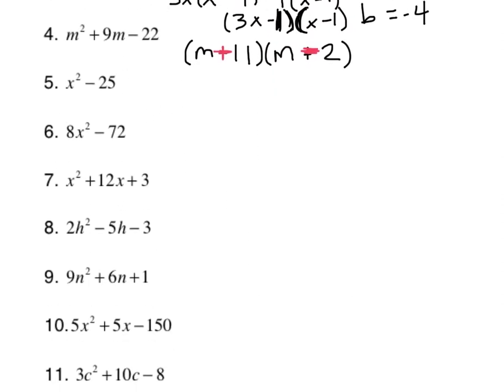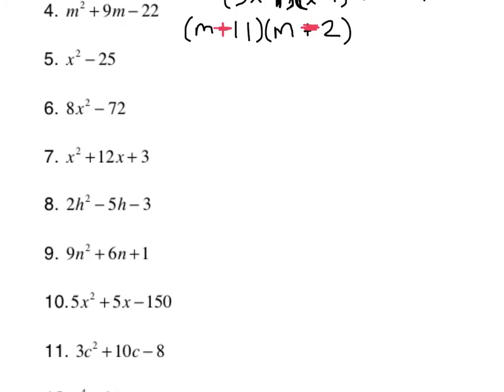All right. Next one. Number 5. A difference of squares. How do I know it's a difference of squares? Well, x squared and 25 are both perfect squares. So I know that all I need to do is find a couple of square roots. Square root of x squared is x. Square root of 25 is 5. One is a sum and the other one is a difference. Factored.